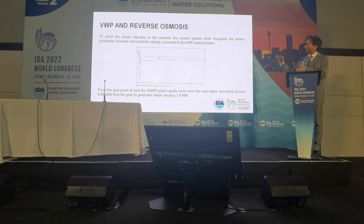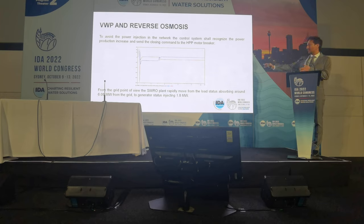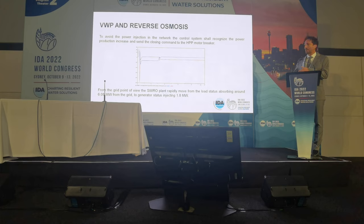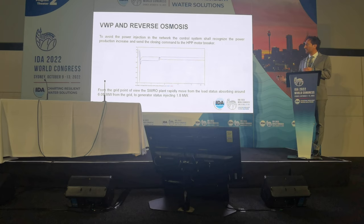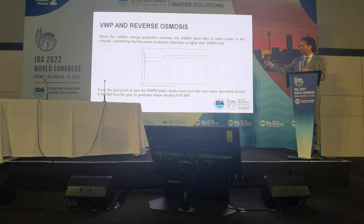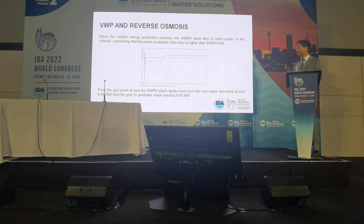We can start the HP pump, use the energy surplus to produce water, and instead of injecting 6.8 MW into the network, we are injecting only 1.8 MW. We can further implement the system and use the energy in different ways. This simulation shows that passing from a state where we are consuming energy to suddenly injecting into the network is not an ideal case for anyone — not for us, not for the network operator.